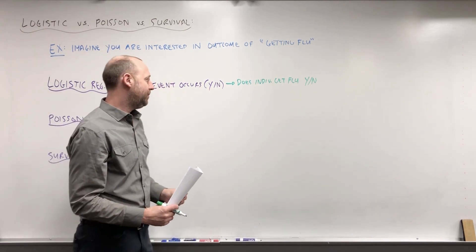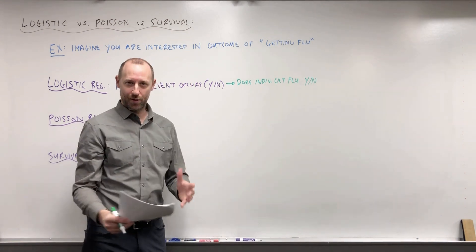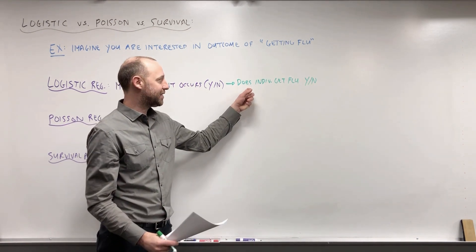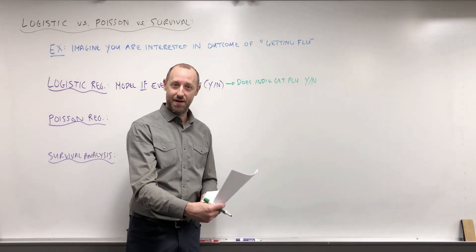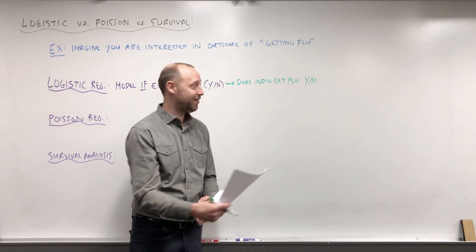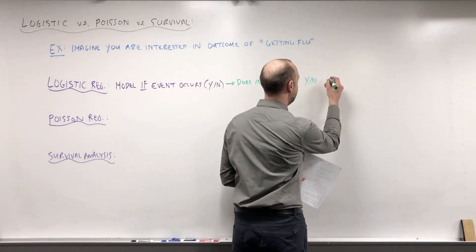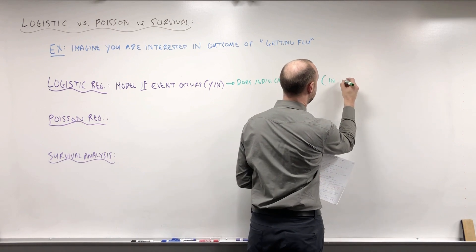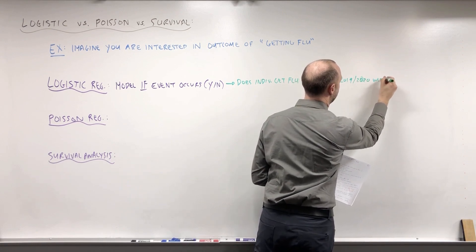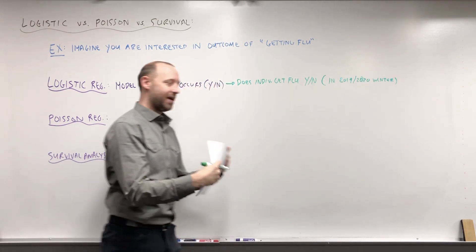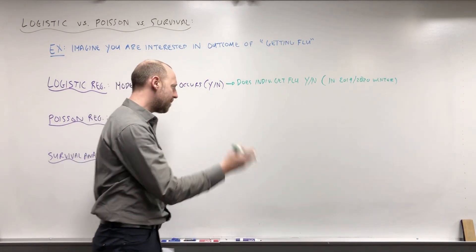Now one important thing with logistic regression: we need to have some endpoint. The example we used earlier in this course was a baby low birth weight, yes or no. We observe that endpoint. If we're saying does someone get the flu, that's too much of an open-ended question. What do we mean by that? Within the next week, the next month, in a year, over their entire lifetime? We need to specify some endpoint. So does the individual get the flu in the 2019-2020 winter? Defining some endpoint where we look at, in this particular winter season, will someone get the flu, yes or no. So that's the previous winter.